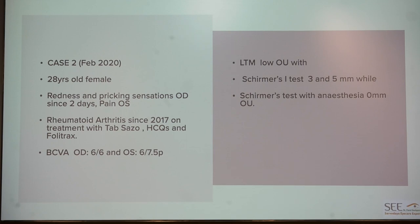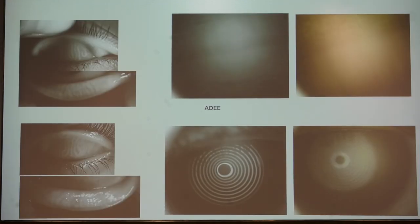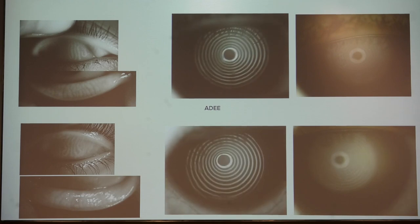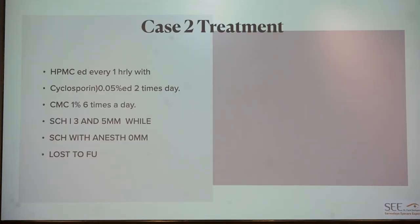Case 2: a 28-year-old female with redness and pricking sensation, known case of rheumatoid arthritis since 2017 on immunosuppressive therapy. She had poor lower tear meniscus; Schirmer's test 1 was 3 and 5 mm, with anesthesia 0 mm. Dry eye workup showed low tear meniscus on infrared imaging, ocular surface stain positivity, and normal meibography. Tear breakup time was affected in both eyes, right more than left, with totally broken lipid layer on right eye interferometry. She was put on HPMC eye drops, CMC gel, and cyclosporine; Schirmer's improved slightly but with anesthesia did not improve. This patient was subsequently lost to follow-up.